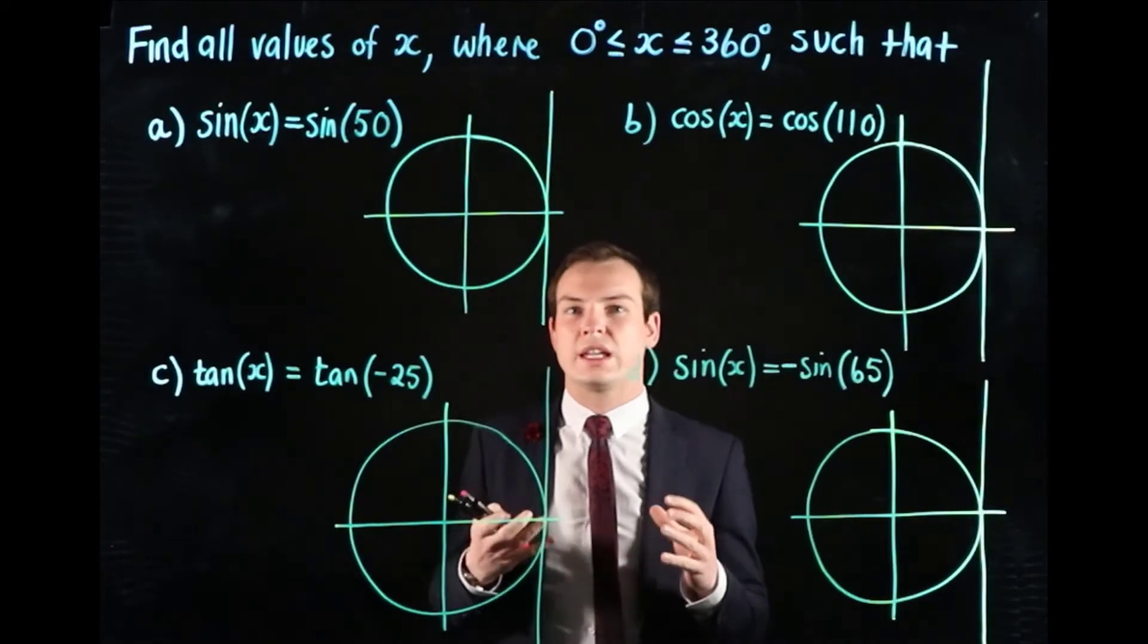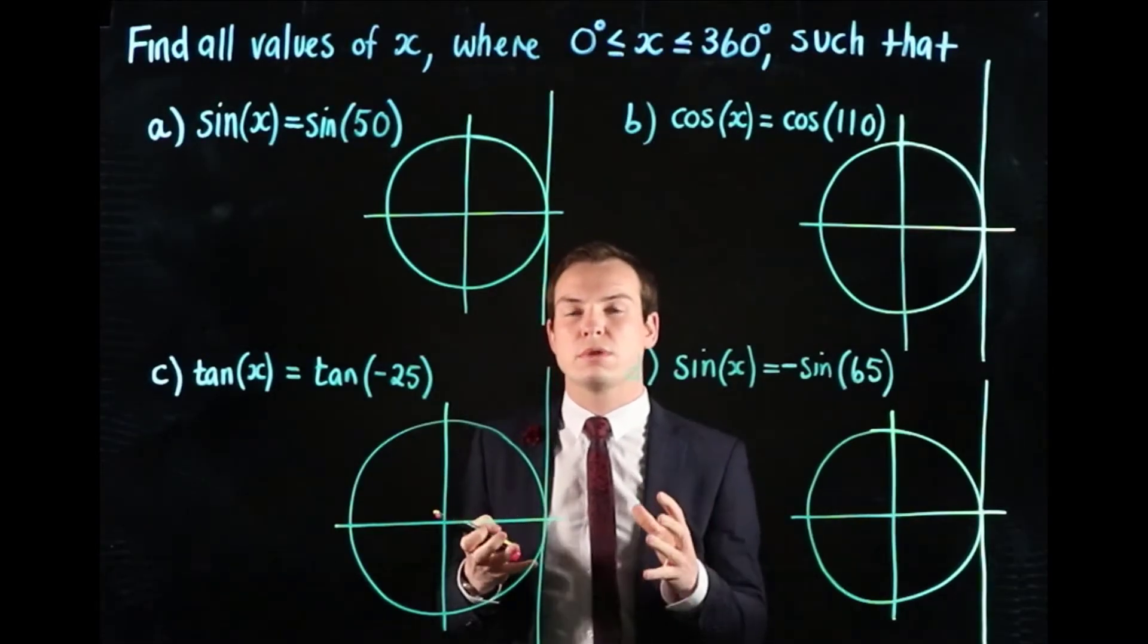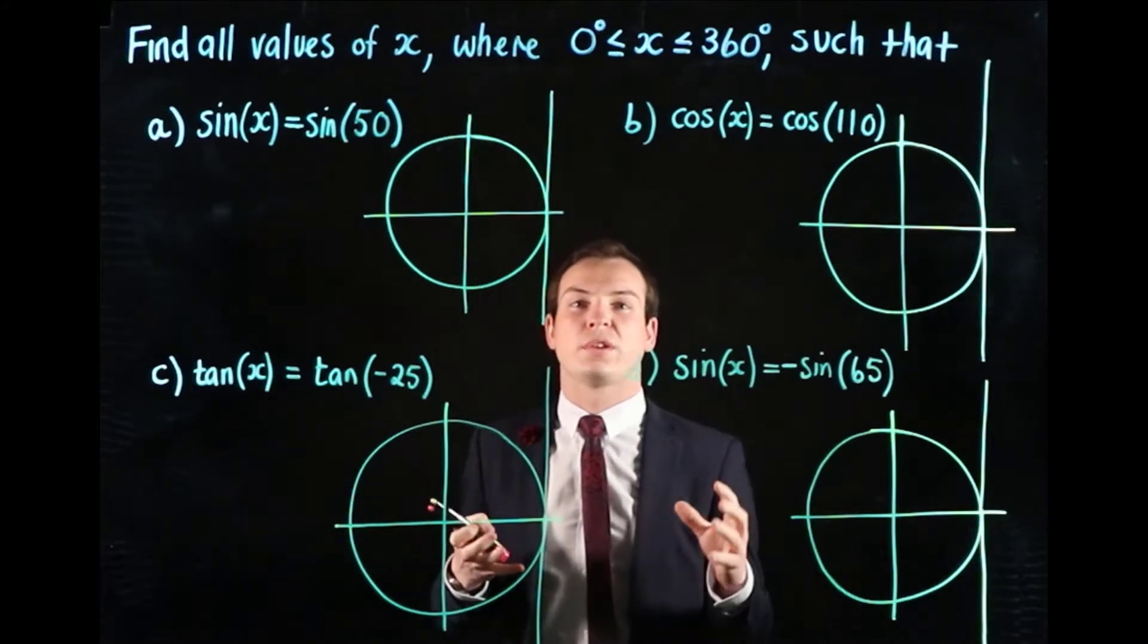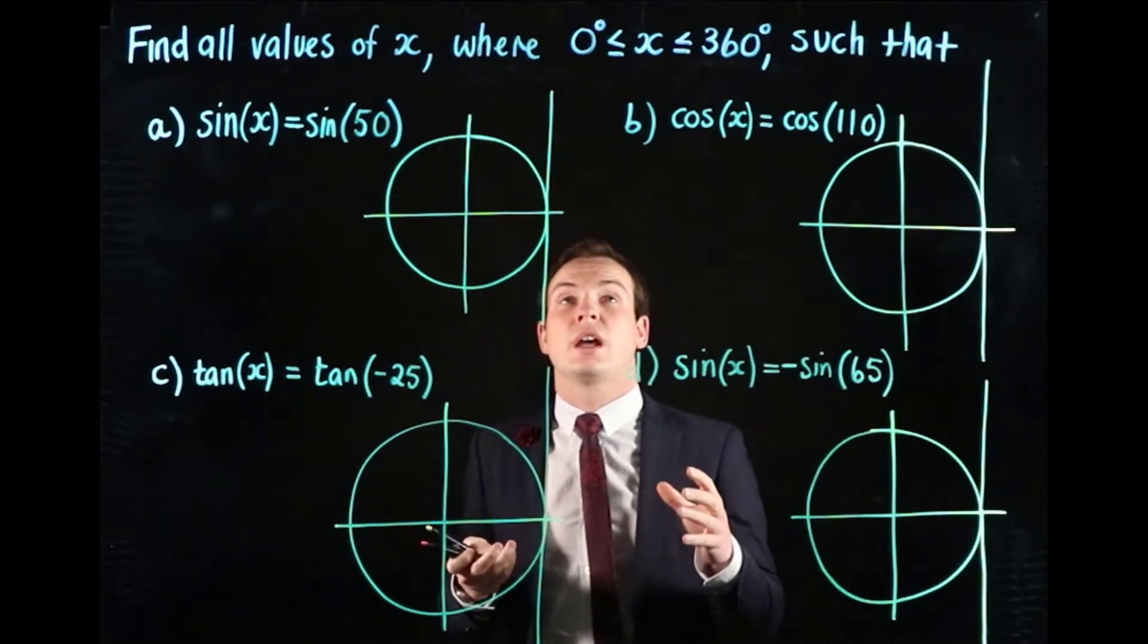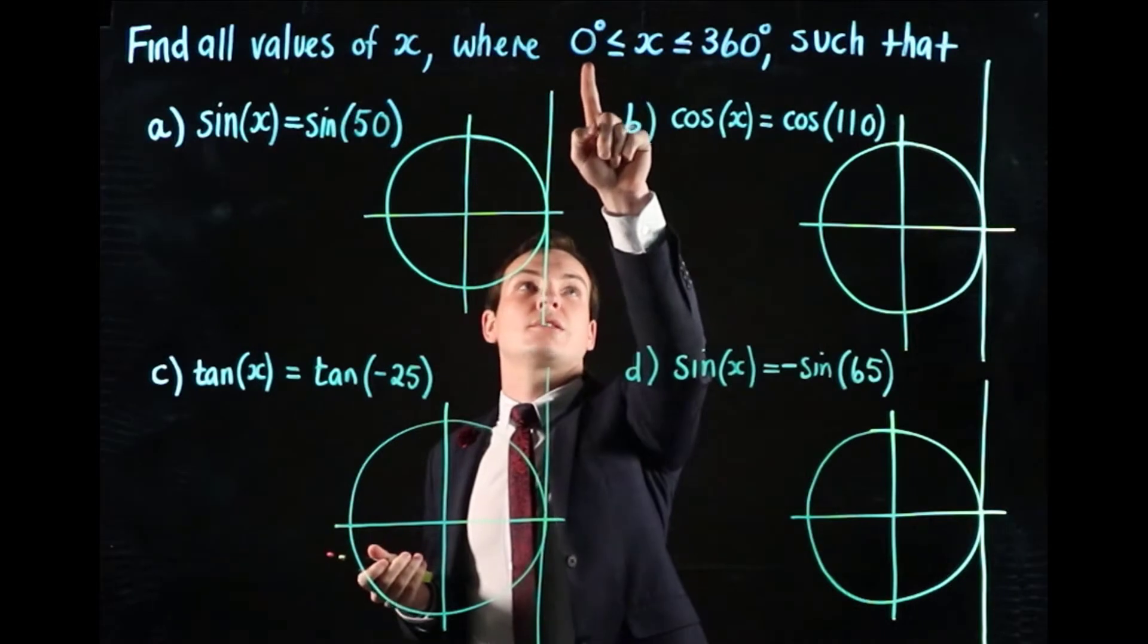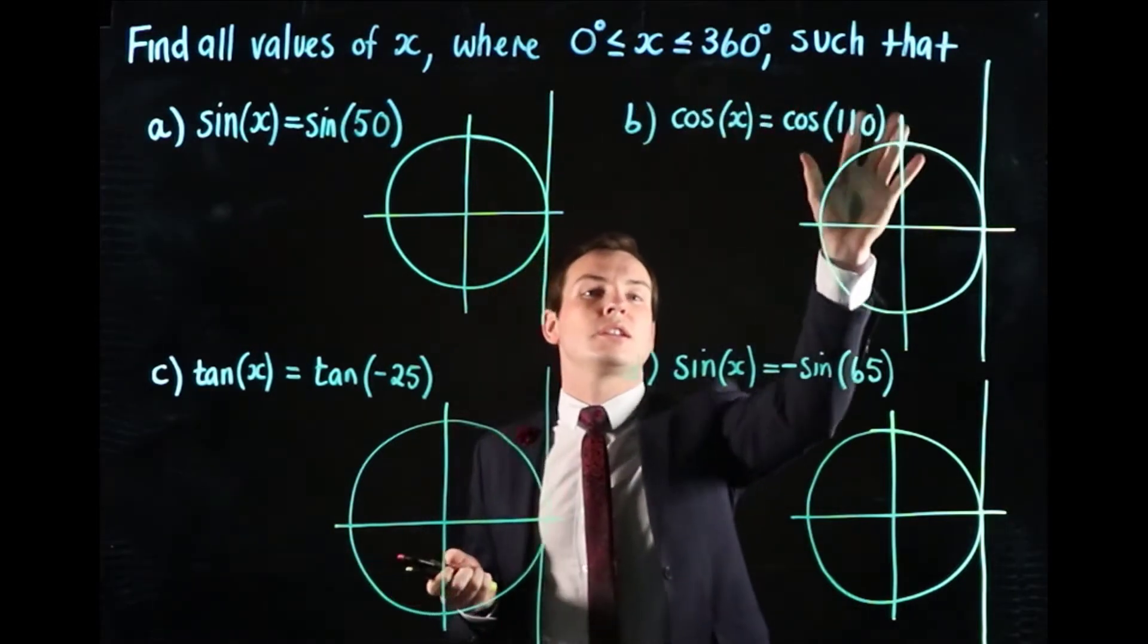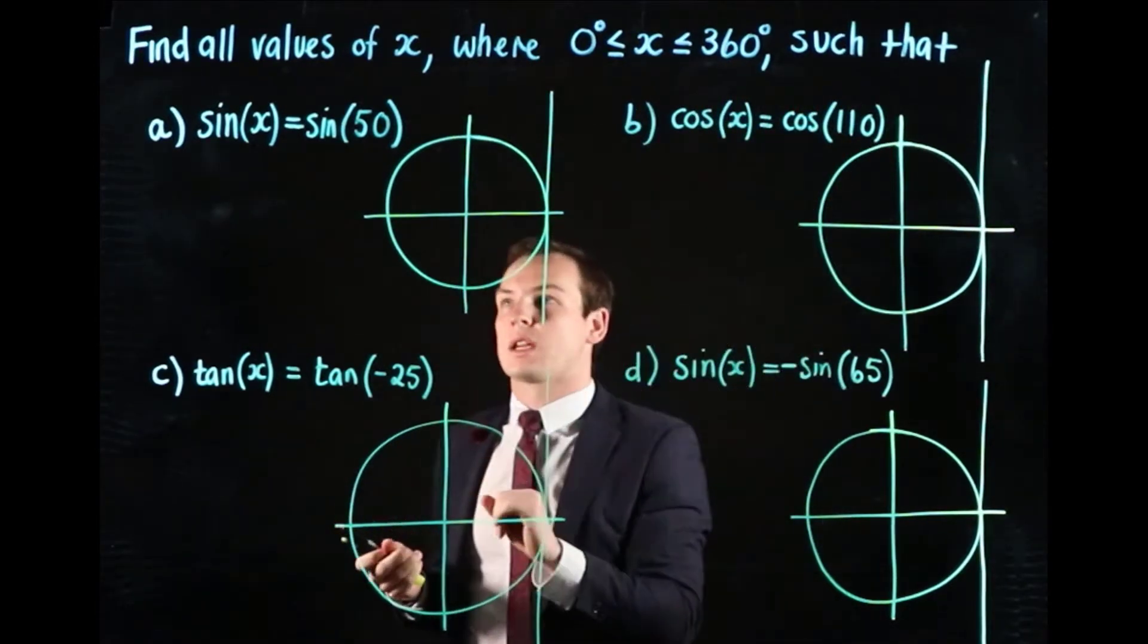In this video we're going to look at an example that involves using the symmetry of the unit circle to find values of x, and in this case we're looking for x between 0 degrees and 360 degrees, such that the following equations are true.